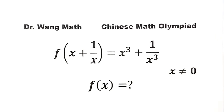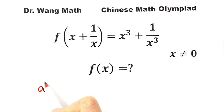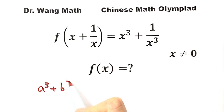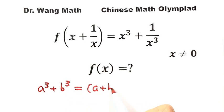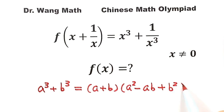Let's start with figuring out what is f of x. Because here we have x to the third and x to the third, we're going to use this formula: a to the third plus b to the third equals a plus b times a squared minus ab plus b squared.